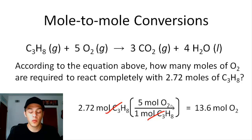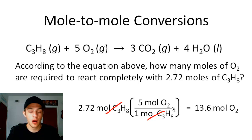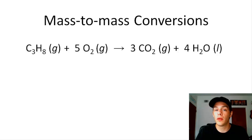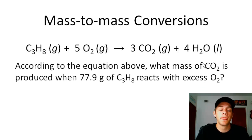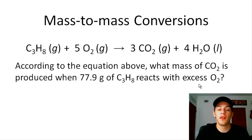More commonly, we have to start out with the mass of a reactant or product and convert that into the mass of another reactant or product. These are called mass-to-mass conversions. They involve more steps, but they're not really that hard. I'm going to use the same combustion of propane reaction equation and do one example of a mass-to-mass conversion. The problem says: according to the equation above, what mass of carbon dioxide is produced when 77.9 grams of propane reacts with excess oxygen? So instead of starting with moles, we're starting with grams, and there are some extra steps involved.